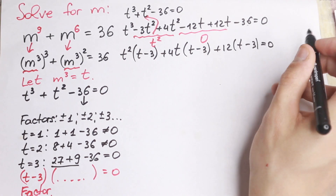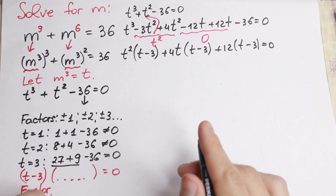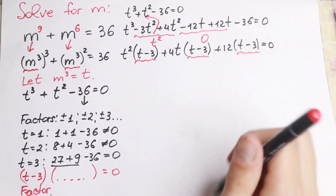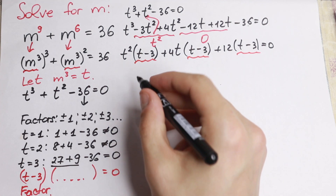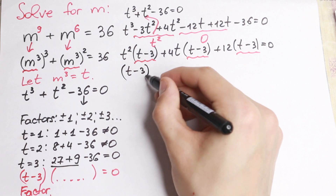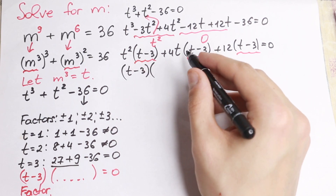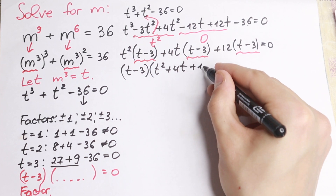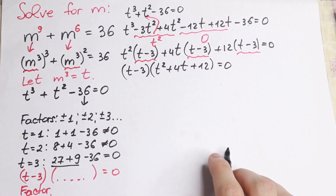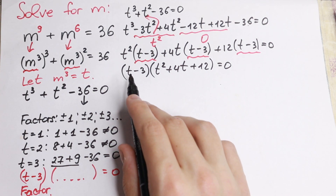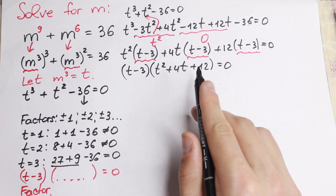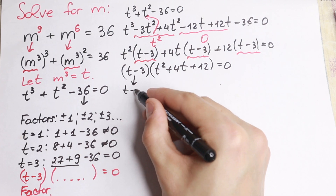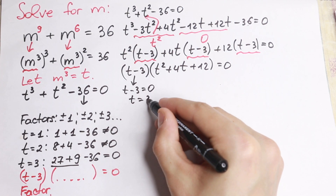I hope you understand this approach — how we create a factor when possible. t minus 3 appears with t minus 3 and t minus 3, so we factor out t minus 3. We get t minus 3 times t squared plus 4t plus 12 equal to 0. So we have t minus 3 in the first parenthesis and a quadratic equation in the second. Let's find the first root: t minus 3 equals 0, so t equals 3.